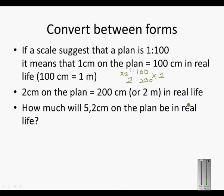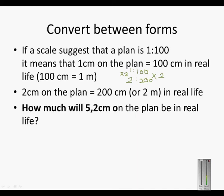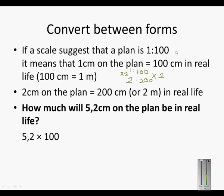Now this is a question. How much will 5.2 cm on the plan be in real life? So remember, the 2.5 cm on the plan is represented by the 1 in the ratio. So to go from 1 to 5.2, we multiply by 5.2, and therefore we have to do the same to the 100. So 5.2 times 100 is equal to 520 cm. And if we divide the 520 cm by 100, we get 5.2 meters. So 520 cm is equal to 5.2 meters in real life.